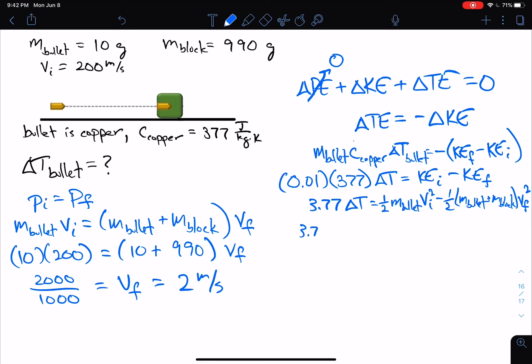So 3.77 ΔT, 1/2. And again, although I didn't do this before, I do need to change the mass to kilograms, and it all comes back to my unit analysis again. I'm using MKS units, and this time, specifically this 377, besides being in terms of kilograms, it's in terms of joules, and joules is defined in terms of kilograms. So I need to make sure that my kinetic energies are coming out in joules. So that means my mass has to be in kilograms. So this is 1/2 times 0.01.